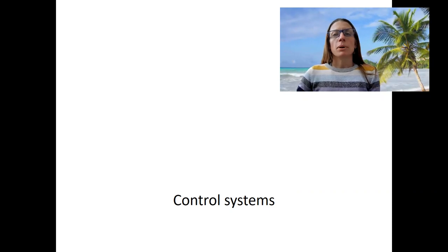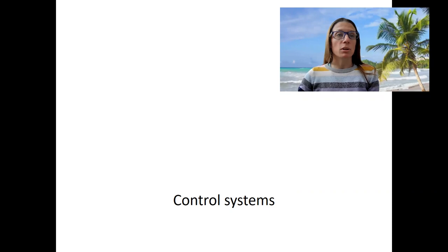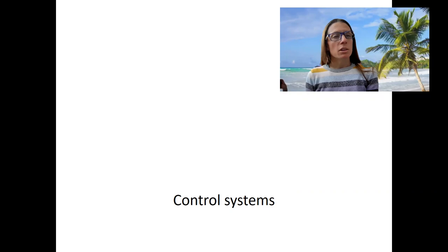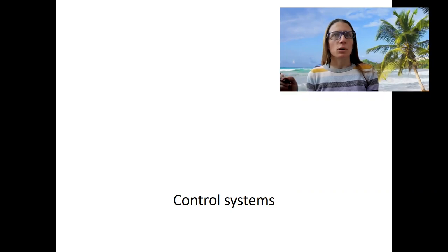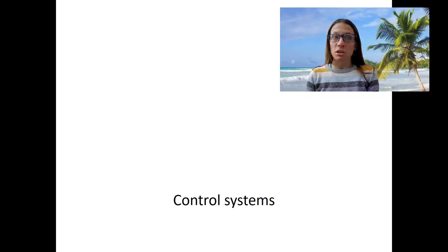Before I talk about the endocrine system in more detail, it makes sense to talk about control systems — the nervous and endocrine systems. I want to compare them so that we can really understand what the endocrine system does and why we have these two different control systems.